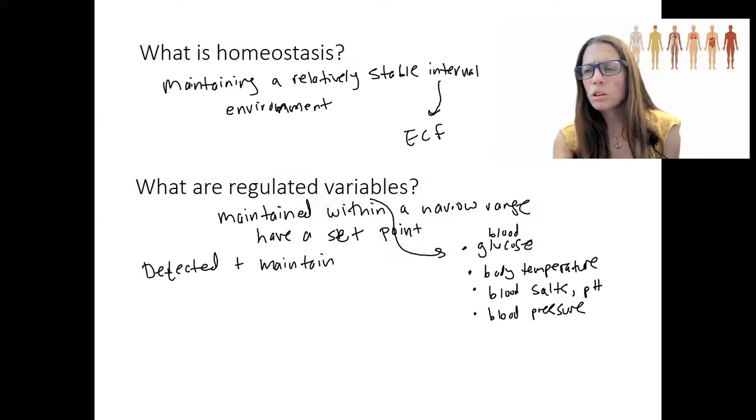What about heart rate? Do you think that that is a regulated variable? Well, it literally is something in the body that's regulated. Your nervous system and endocrine system can regulate heart rate, but it is not a regulated variable. It is designed to change dynamically in order to maintain blood pressure. The range of heart rate is maybe 40 to 200 is a normal, is a fine heart rate, depending on the condition.